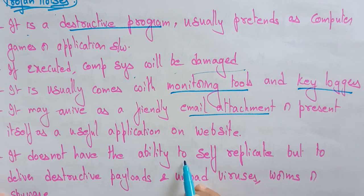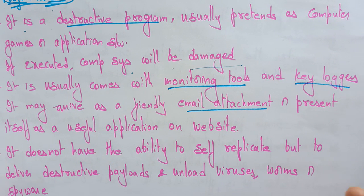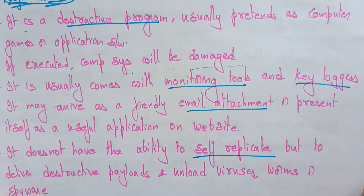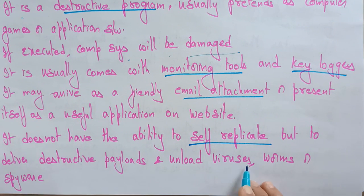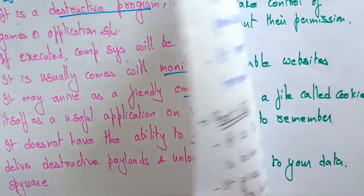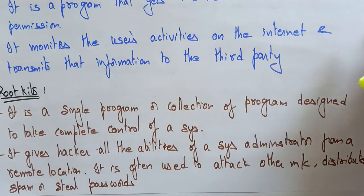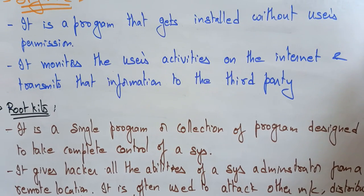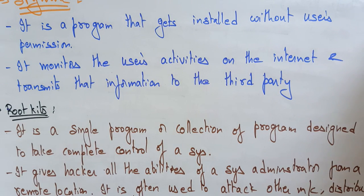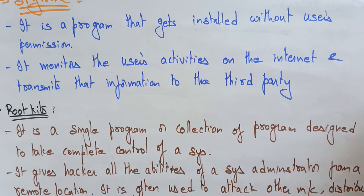Unlike worms, Trojan horses do not have the ability to self-replicate. However, they are used to deliver destructive payloads and unload viruses, worms, or spyware. Whenever this type of security threat appears, it tries to compulsorily convince you to install those applications. Don't believe it — first verify whether it is actually required, then proceed. Otherwise, it is a virus that will damage your system.